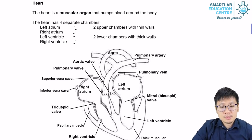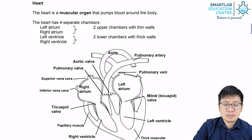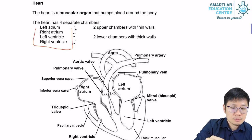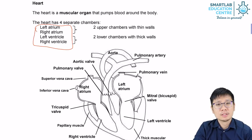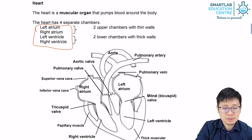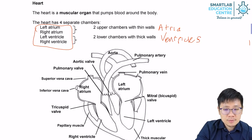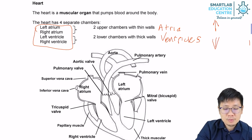For general purposes, you should try to remember every important part of the heart and know how to label them. The most important are the four separate chambers: the left atrium, right atrium, left ventricle, and right ventricle. There's an easy way to remember upper chambers and lower chambers — the upper chambers are the atria, and the lower chambers are the ventricles. Look at the letters A and V: A kind of looks like an up arrow, and V kind of looks like a down arrow, so you can remember that way.